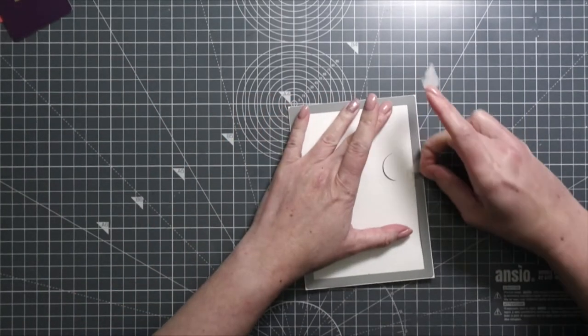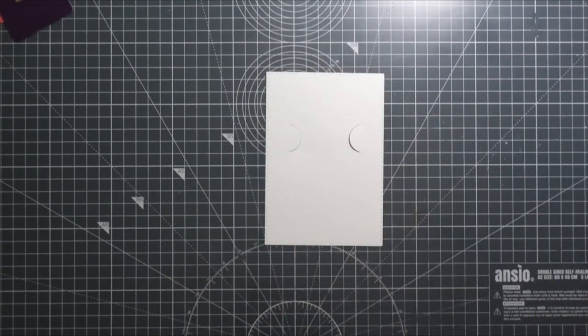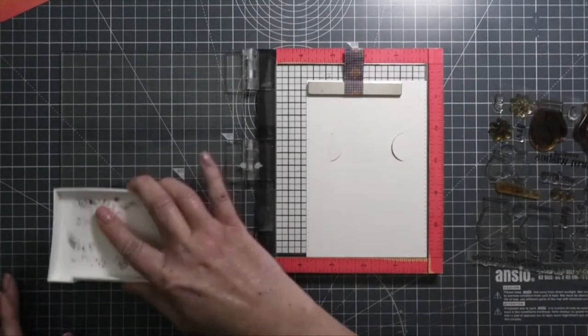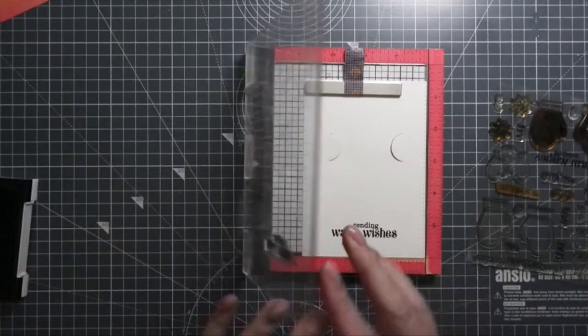I ran it through my die cutting machine as well. Next I stamped the sentiment from the stamp set with the mittens—it's 'Sending Warm Wishes'—using Versafine ink in Onyx Black.